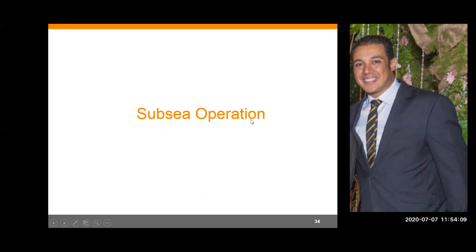Now we've talked about the subsea production system and the subsea distribution system. We have the building blocks — cluster, template, daisy chain, and satellite wells — and the distribution system as a feeding and controlling system. The golden rule is to transfer our production, whether oil or gas, safely to shore. By combining the production system and distribution system, we can achieve this safely.